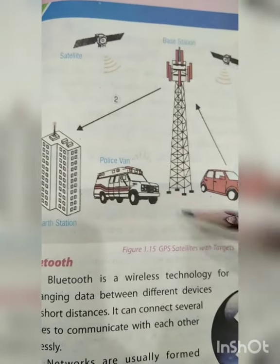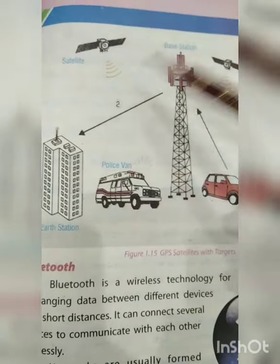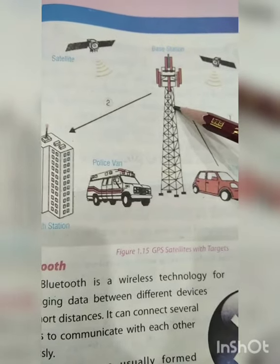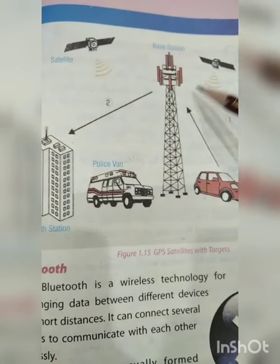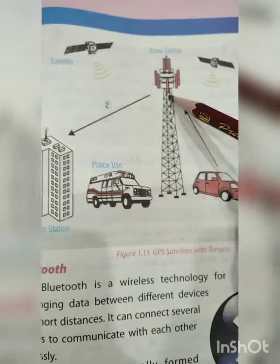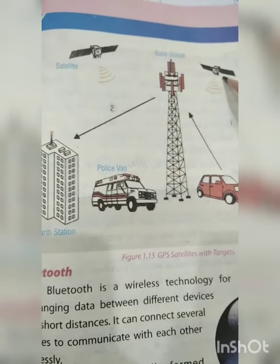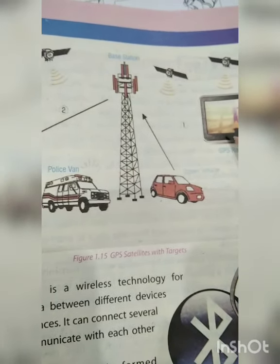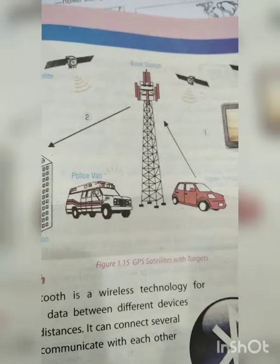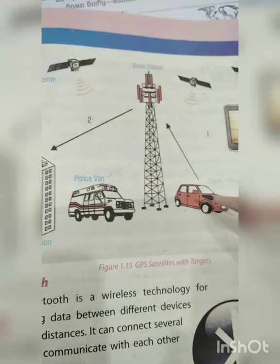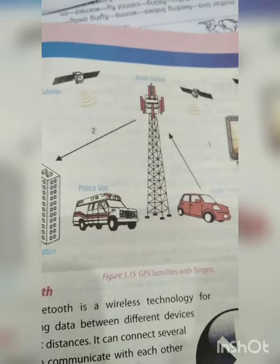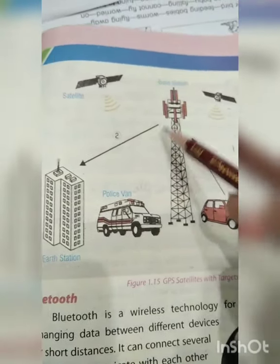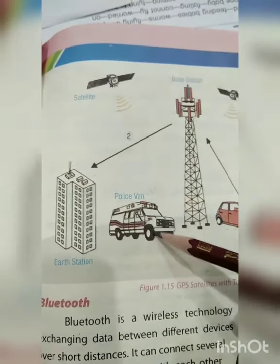جیسے کہ آپ اپنی diagram 1.15 دیکھیں — satellite میں سب سے پہلے ہوگا base station، جہاں آپ کو GPS کا system ہے۔ اس میں signals ہیں اور satellite میں بھی signals ہیں۔ یہ پہلے connect ہوں گے۔ GPS پہلے satellite کو آگے آپ کی جگہ کو identify کرے گا اور بعد میں بتائے گا کہ آپ کہاں ہیں۔